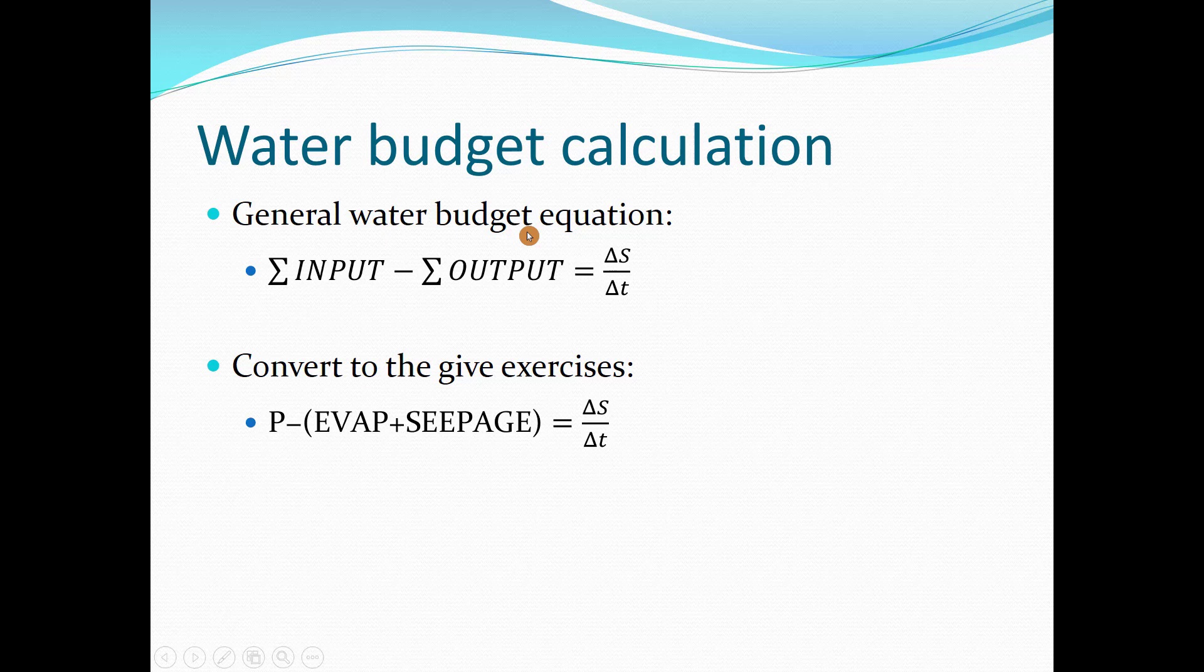Water budget calculation. The general water budget equation is: summation of input minus summation of output equals change of storage.